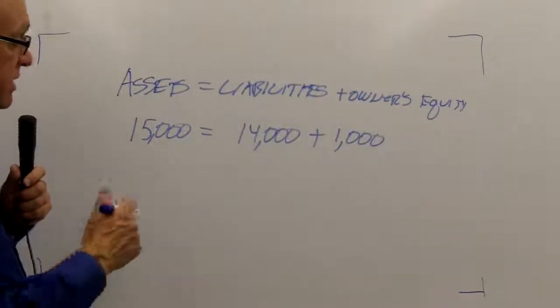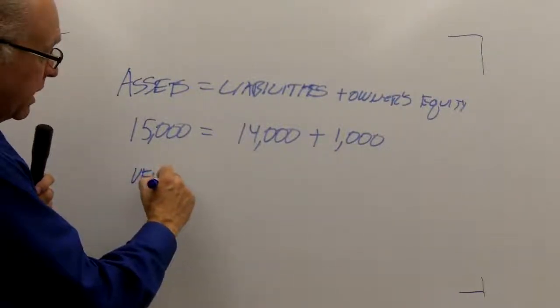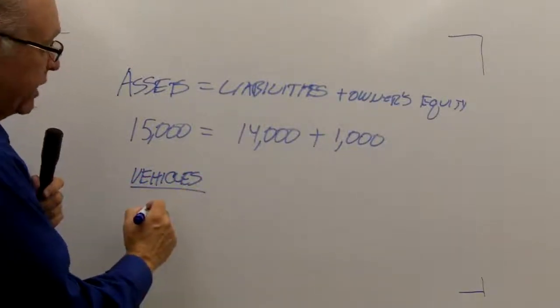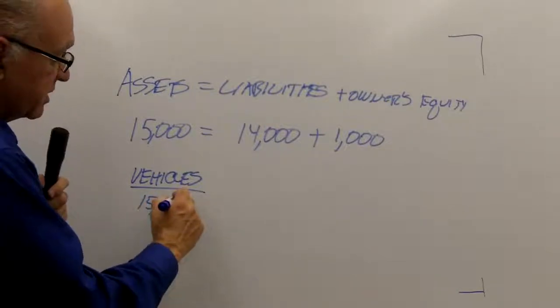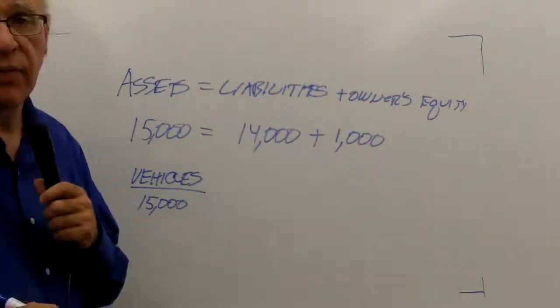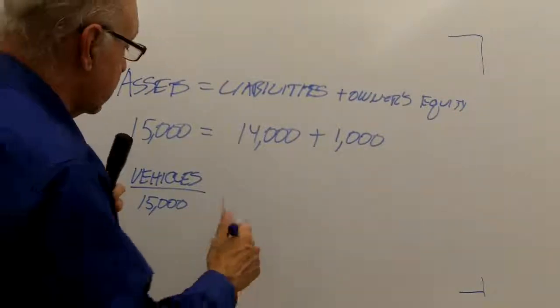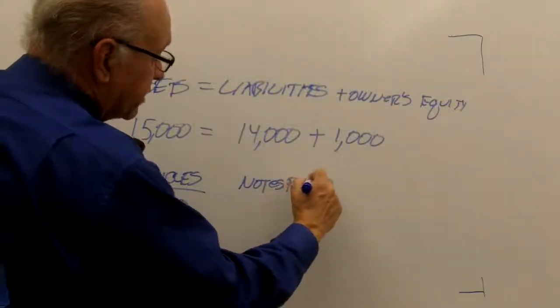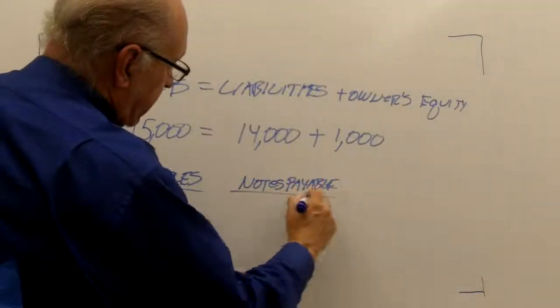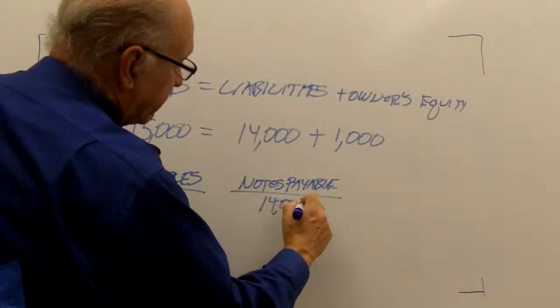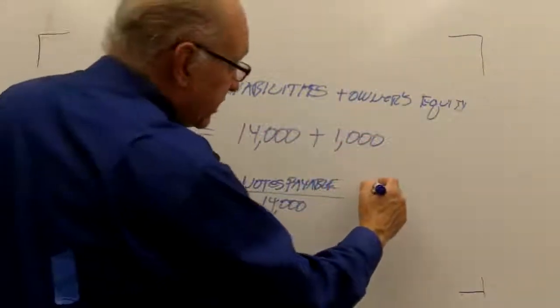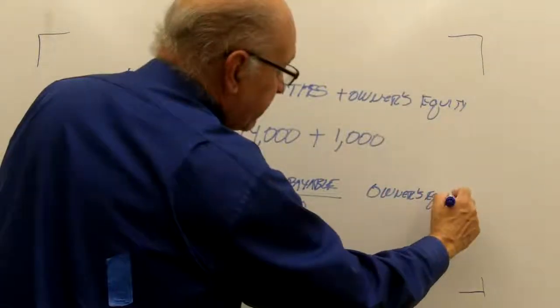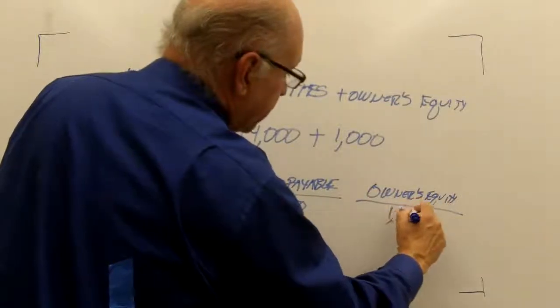So for instance, in this example, I might have an account called vehicles, and under that vehicles I will show $15,000. The liability, the note that I signed to get the car, I would show that as notes payable - that is a note that I signed that I have to pay back - $14,000. And then I could actually have an owner's equity account for this purpose, and we'll show $1,000.